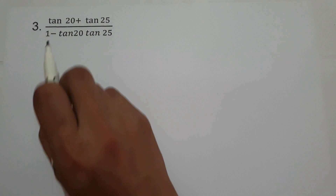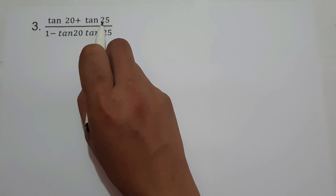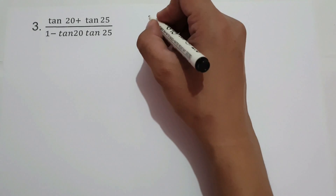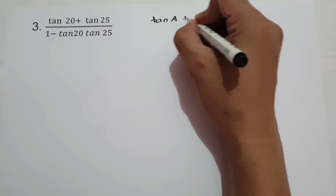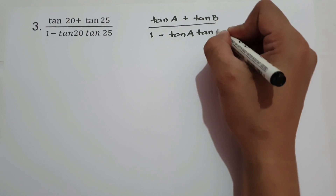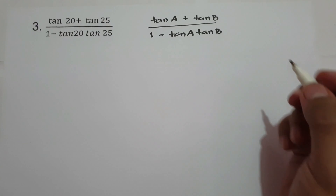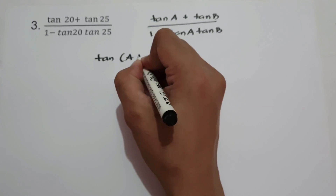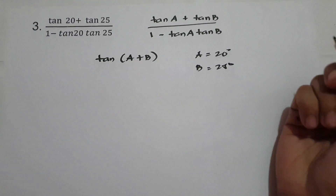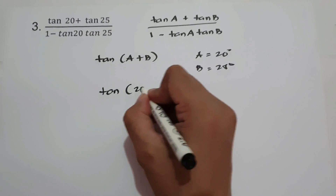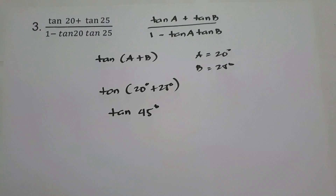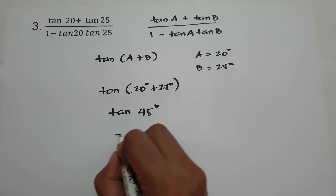On number 3, we have (tan 20° + tan 25°) / (1 - tan 20° · tan 25°). As you can see, this is written in the form of tangent(A+B), so we use that formula. With A = 20° and B = 25°, this equals tangent(20° + 25°) = tangent 45° = 1. This is our answer.